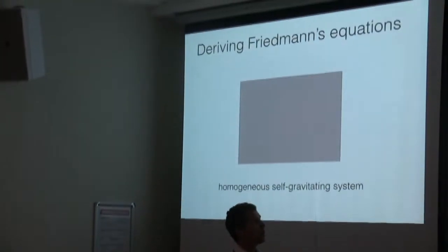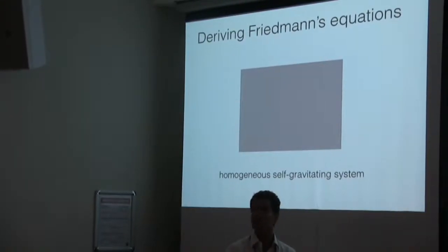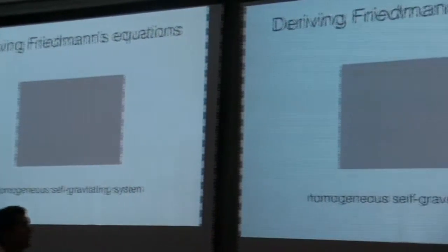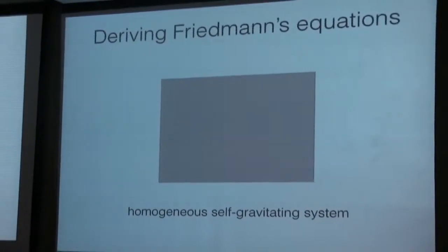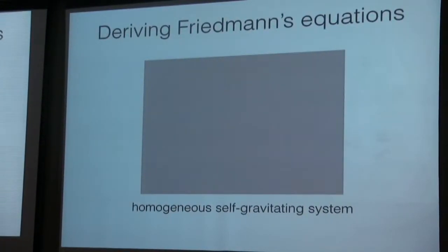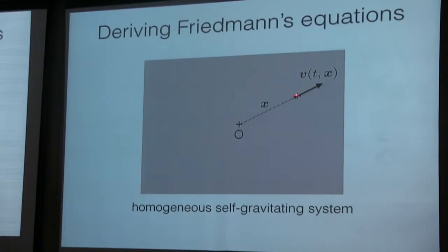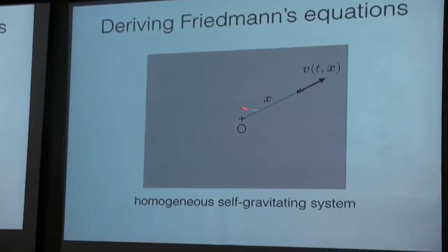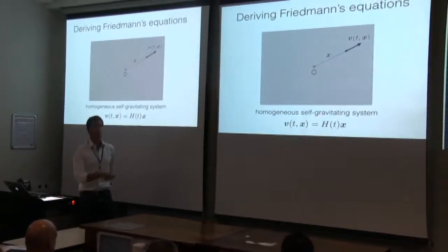We want to describe the evolution of a homogeneous self-gravitating system, which can be finite or infinite, and which is expanding. Because we have expansion from the beginning, we know there should be a velocity field. If I choose an arbitrary origin in this homogeneous fluid, I can describe the motion of fluid particles everywhere with a velocity field V. And if you assume homogeneity and isotropy, there is only one expression for this velocity field, which is the Hubble flow. This is not an assumption — it is a consequence of homogeneity and isotropy.